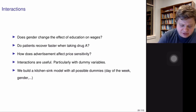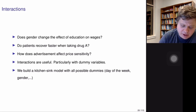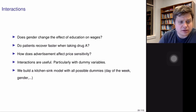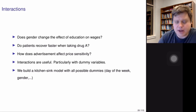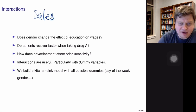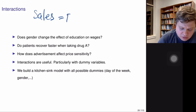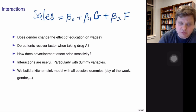Let's look at a very simple example. Think of a marketing campaign where you run it both on Facebook and Google. You spend some money to advertise your product on Google and Facebook, and you're interested in the sales — that's your y variable. You want to understand the relationship between the sales and the amount of money you spend on Google advertisement and on Facebook advertisement.